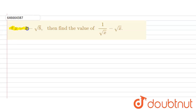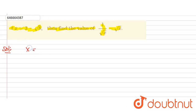Here the question is given: if x is equal to 3 minus under root of 8, then find the value of 1 divided by under root of x minus under root of x. Let's solve this question. Given x is equal to 3 minus under root of 8, and we have to find this expression.